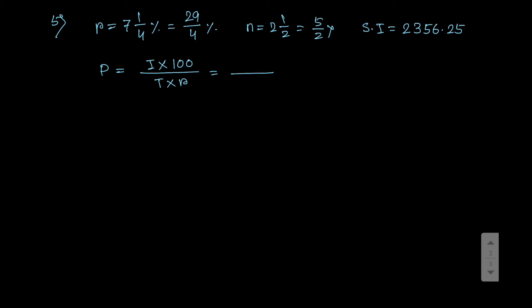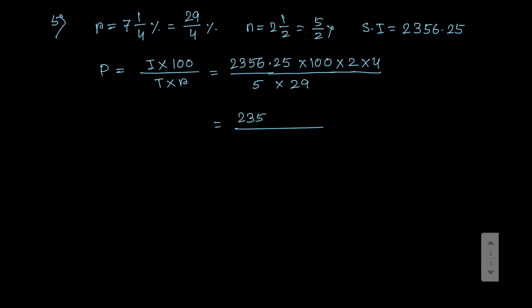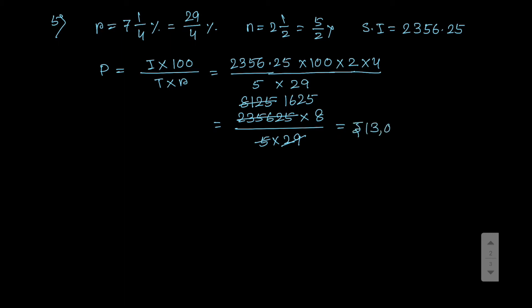Using P equals I into 100 divided by n into r: that means 2356.25 into 100 divided by 5 by 2 — so 2 comes here — and 29 by 4 — so 4 comes here. So it becomes 2356.25 into 4 into 2, that is 8, divided by 5 into 29. Dividing: 2356.25 divided by 8 gives 1625, then 1625 divided by 5 gives 1625, and 1625 into 8 equals rupees 13,000. So 13,000 is your answer.